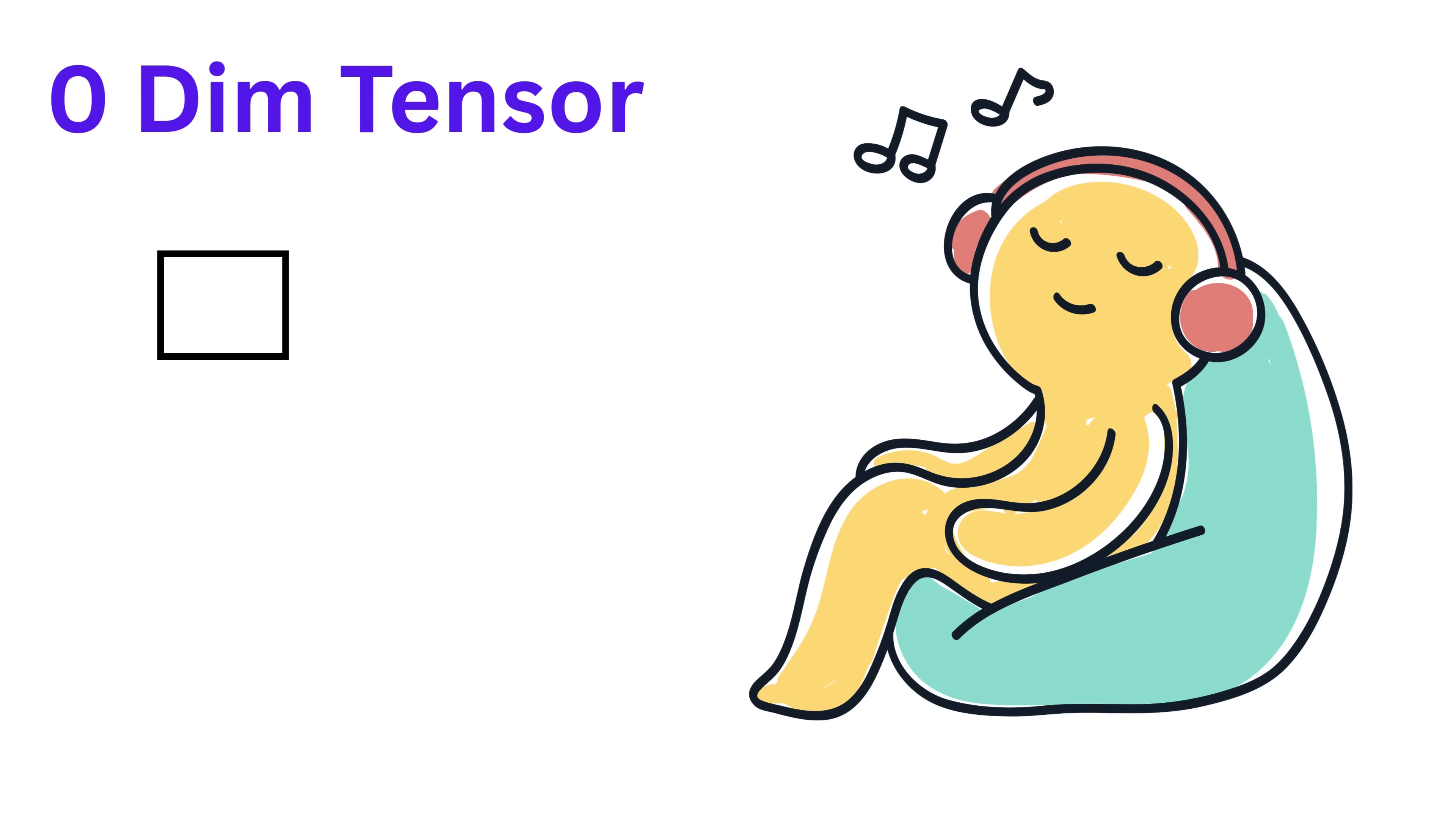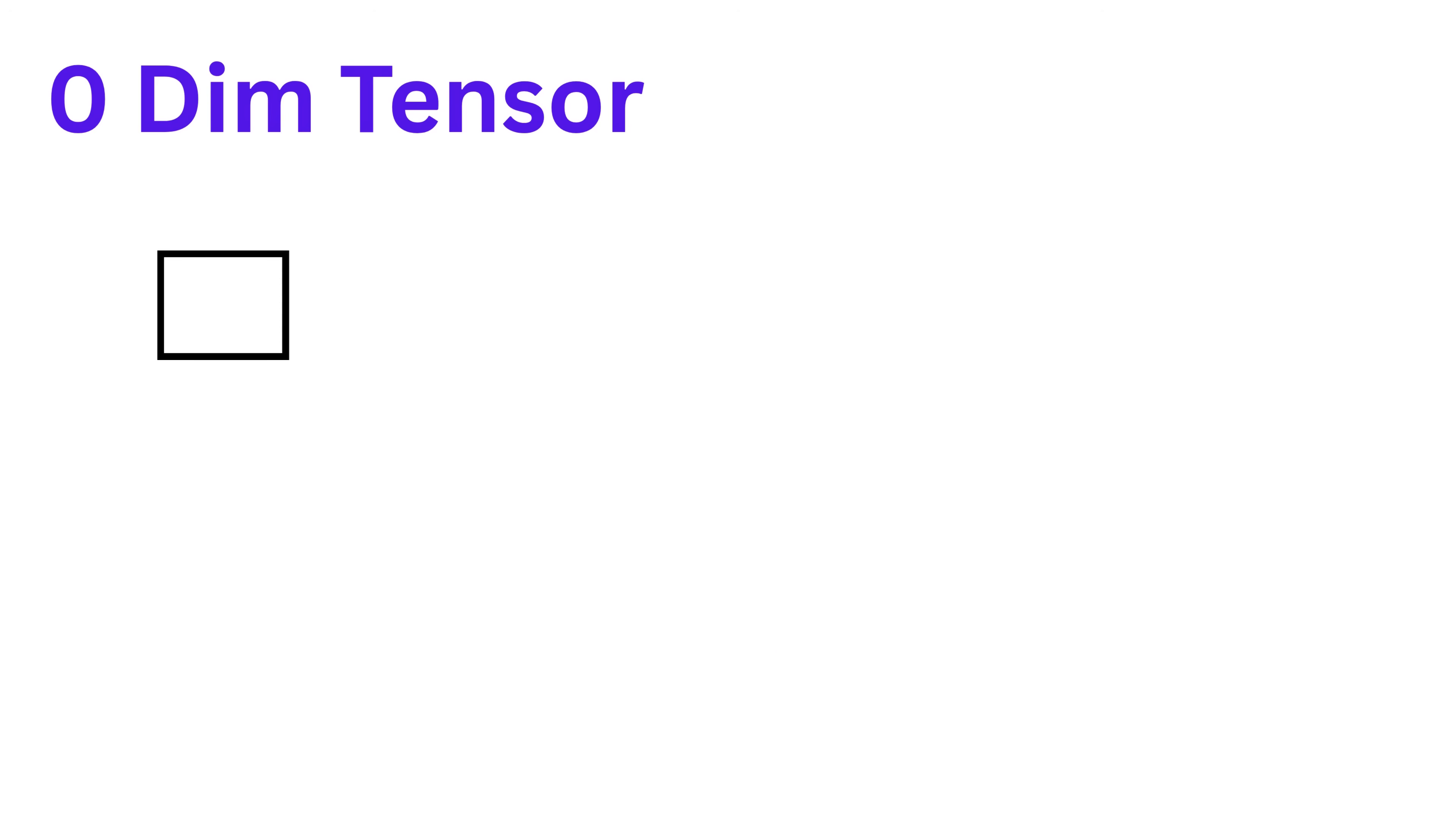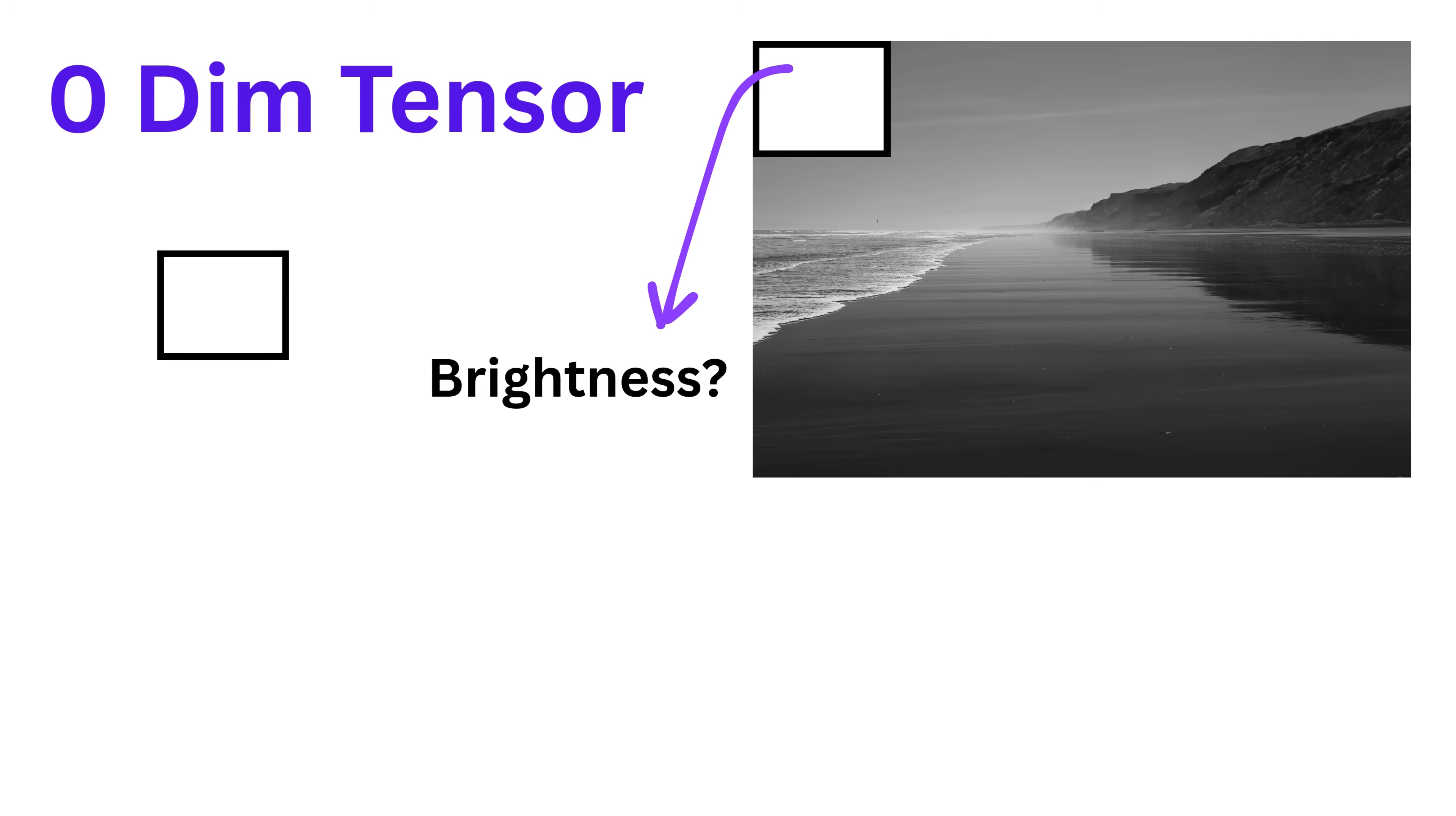Let's begin at the simplest level, which is the zero-dimensional tensor. A zero-dimensional tensor is just one single number. That's it. It's like asking, what is the brightness of just one single pixel from a black and white image, taken alone with no width, no height, and just one dot? For example, the brightness of this single pixel is 128. So, a zero-dimensional tensor is just a number like 128. It has no shape, no structure, no direction. It's just a single number.